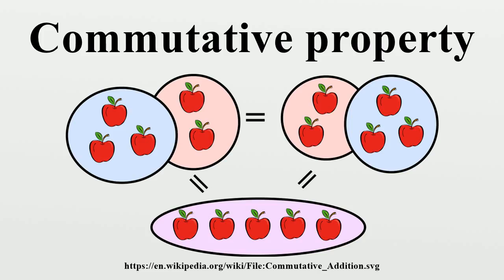Non-commutative operations in everyday life: Concatenation, the act of joining character strings together, is a non-commutative operation. Washing and drying clothes resembles a non-commutative operation — washing and then drying produces a markedly different result to drying and then washing. Rotating a book 90 degrees around a vertical axis then 90 degrees around a horizontal axis produces a different orientation than when the rotations are performed in the opposite order.